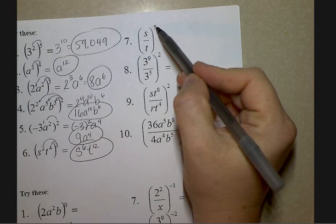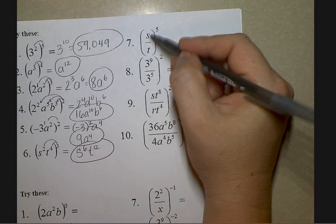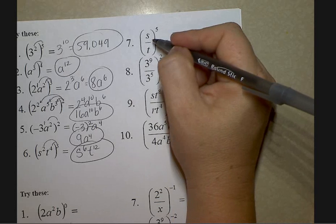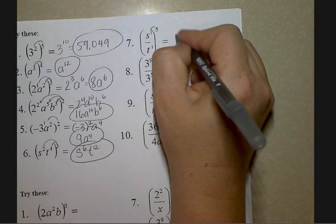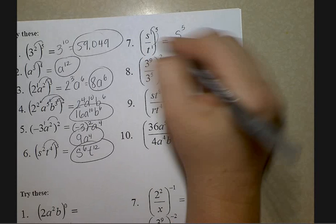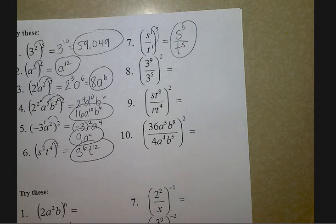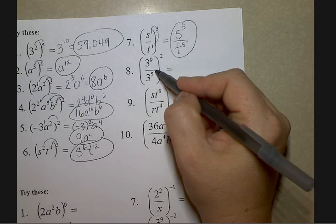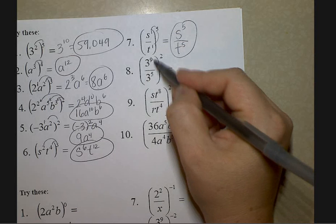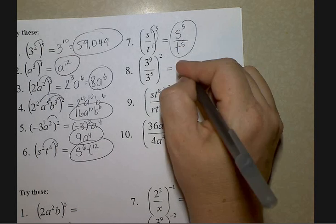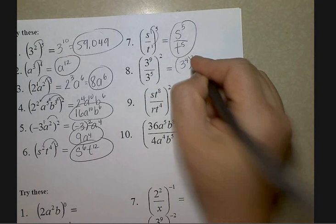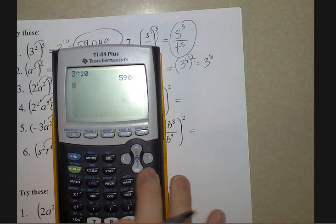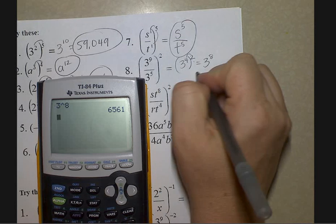Now we're doing power of a quotient. Look inside to see if there's anything to simplify, then distribute the fifth. You can't simplify s and t because they're not the same base. Distribute — that means multiply: s to the fifth, t to the fifth. For number 8, there's something more I can do because you have the same base: subtract the exponents since we're dividing. Nine subtract five is four, the larger exponent was on top. Apply the 2 afterwards — that makes it not 3 to the 6th but 3 to the 8th, which is 6,561.